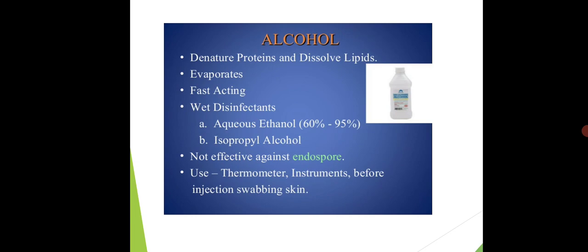How can we use alcohol? For sterilization of thermometer, for sterilization of instruments, before injection swabbing skin. Doctors generally use alcohol before injection or before applying syringe. Before injection, alcohol is swabbed onto the skin just to clean that area and to kill the microorganisms.